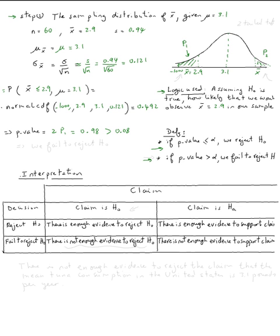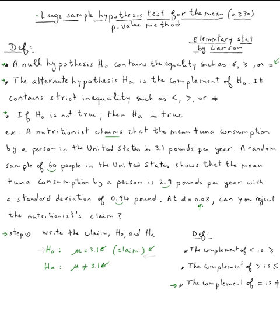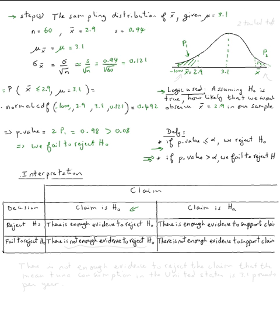Therefore, we fail to reject, looking here, we fail to reject H₀. Now, we're going to do the interpretation. We fail to reject. First of all, the claim is in H₀. Claim is H₀. We fail to reject, so we're going to use this. What do we say? There is not enough evidence to reject the claim.